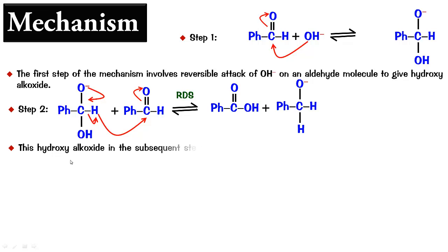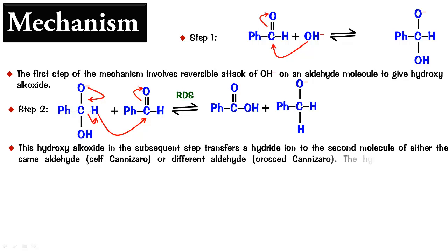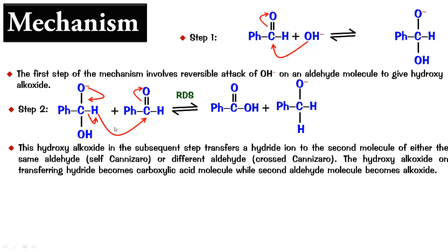Now in this step the hydroxy alkoxide has been able to transfer the hydride and that H has attached to another molecule of the aldehyde. Now if the same molecules are involved we call it self-Cannizzaro, if different aldehyde is involved it is called cross-Cannizzaro. Remember the hydroxy alkoxide on transferring the hydride becomes a carboxylic acid molecule while second aldehyde becomes alkoxide.